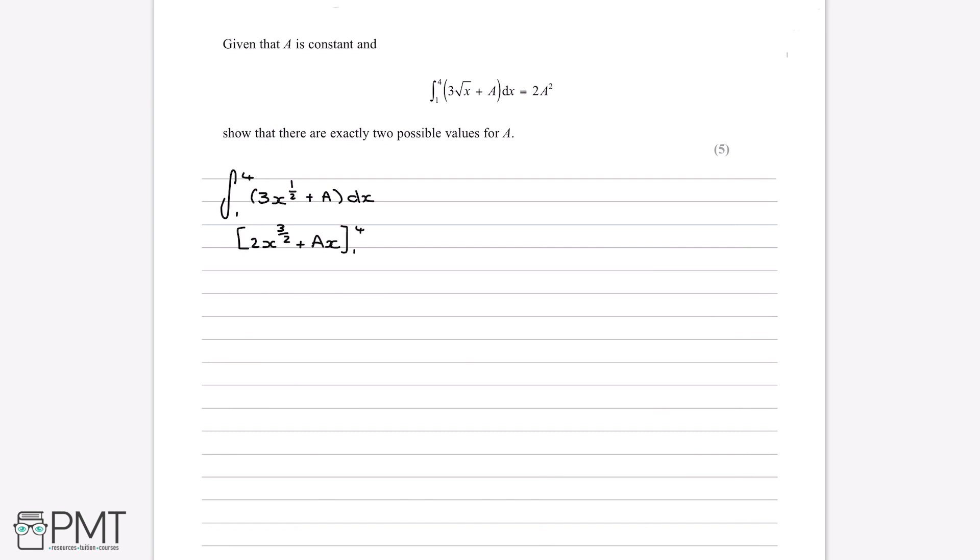And then we keep, because this is still between the limits of 4 and 1. So the next thing we do is we substitute in for x, we substitute in 4 and 1. So we always do the larger limit first, which here is 4. So we do 2 bracket 4, 4 to the power of 3 over 2, plus a bracket 4.